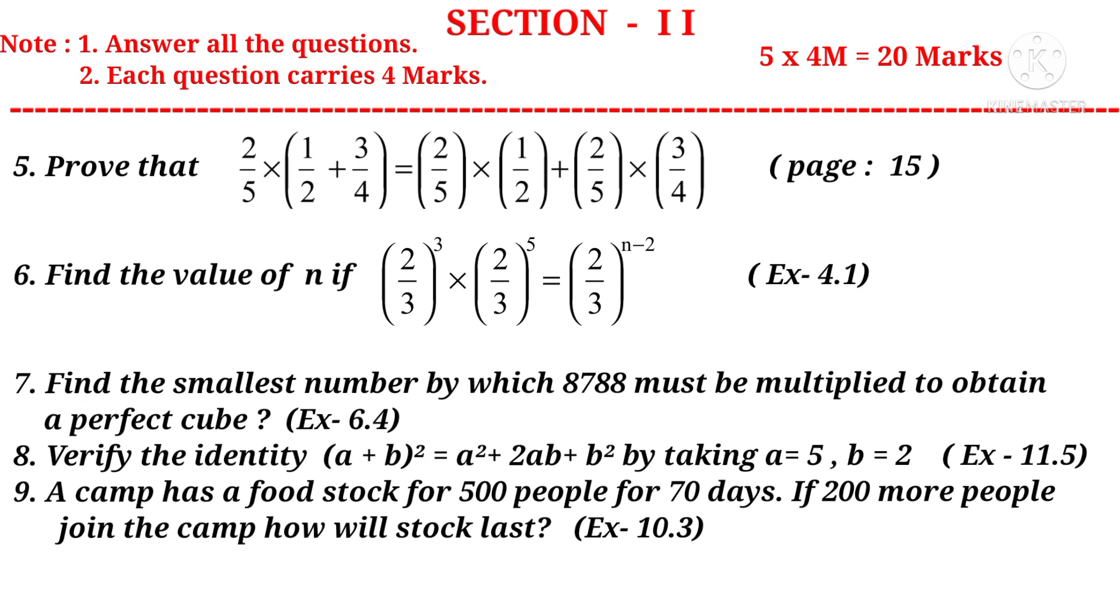Question number 9: A camp has a food stock for 500 people for 70 days. If 200 more people join the camp, how long will the stock last? It is a question from the 10th chapter.